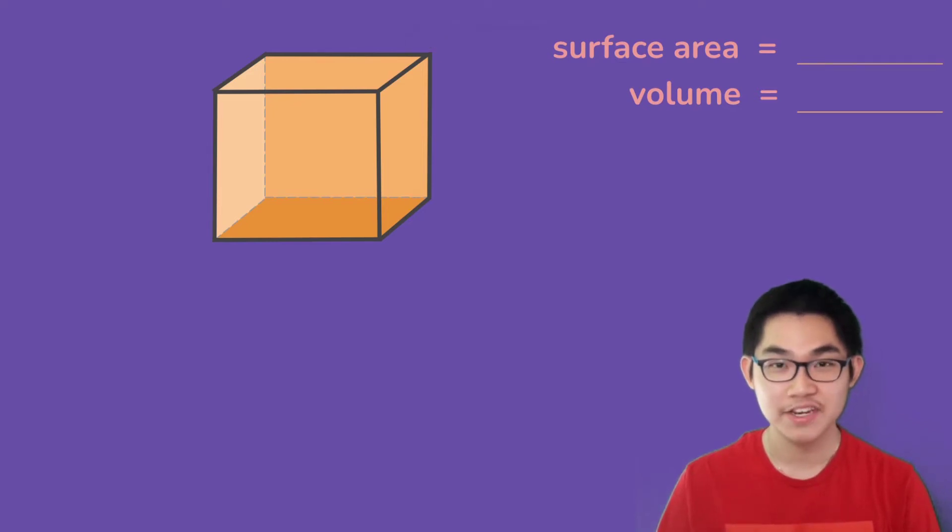Hi guys, in this video I'm going to show you how to find the surface area and the volume of cubes. So a cube is a box where the length, the width, and the height are the same, and because of that each side of a cube is a square.